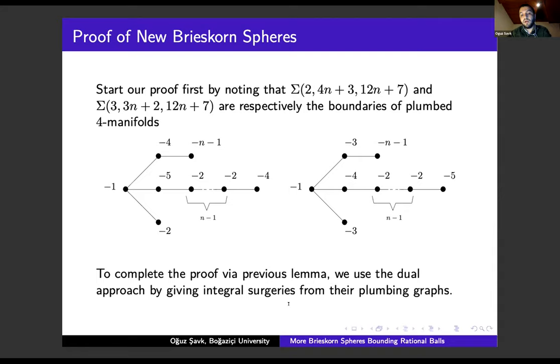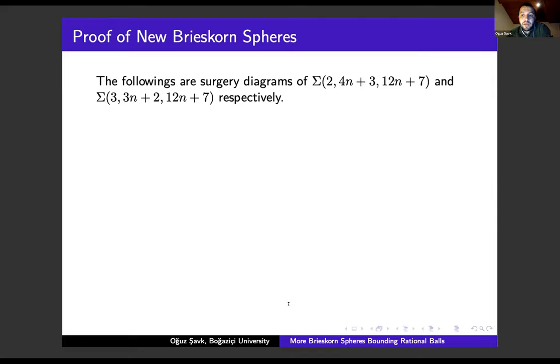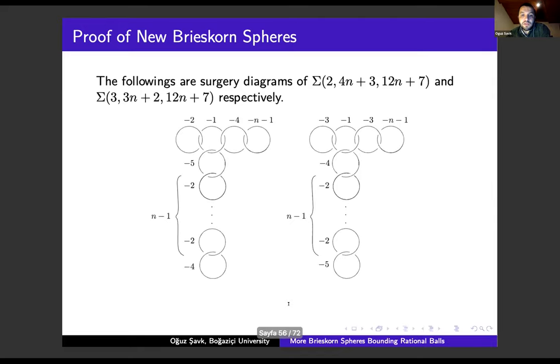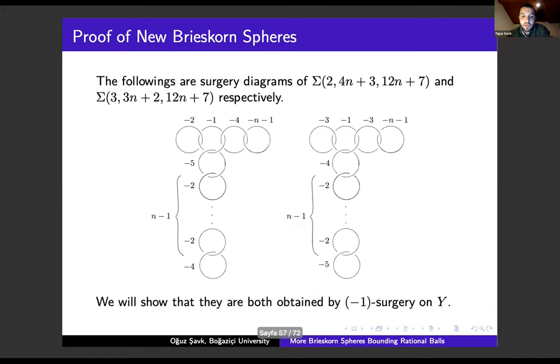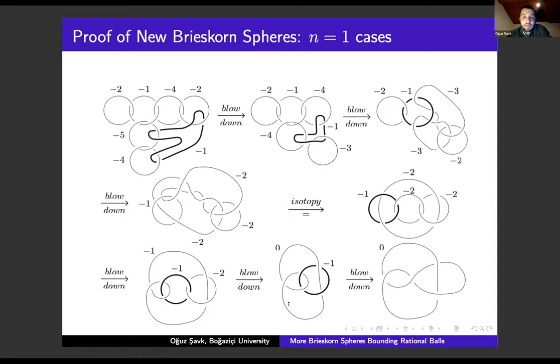To complete the proof via the previous lemma of Akbulut and Larson, we use a deal approach. We will give integral surgeries from their plumbing graphs. These are the corresponding surgery diagrams. We attach each dark black knot and unknot. We will explicitly show that our spheres are obtained by a minus one surgery on the three-manifold Y. For the first family, this is the base case. A minus one dark black component will be blown down, and as you see, we reach the three-manifold Y easily.